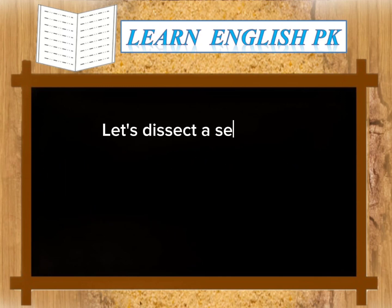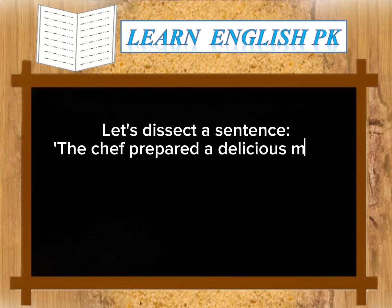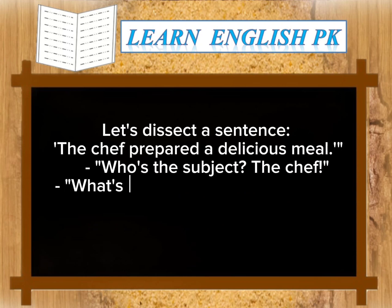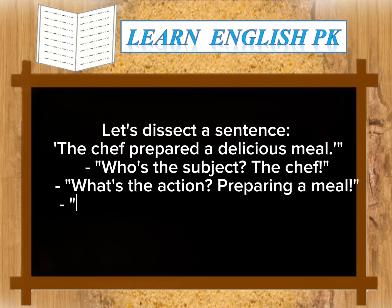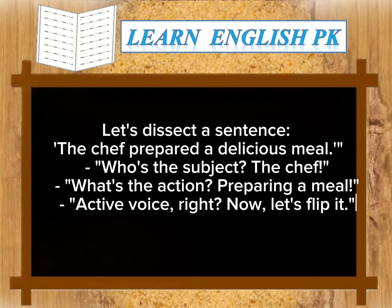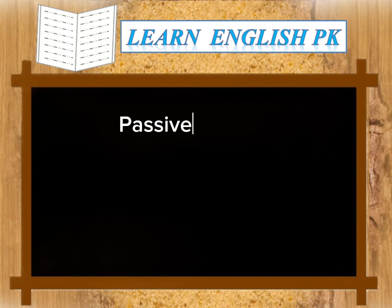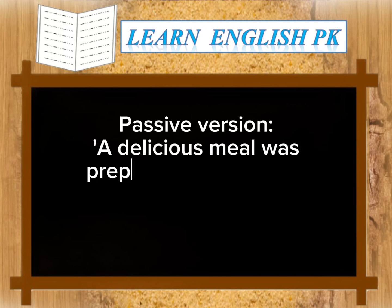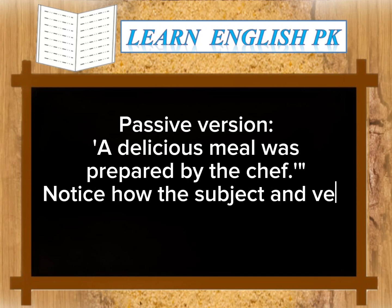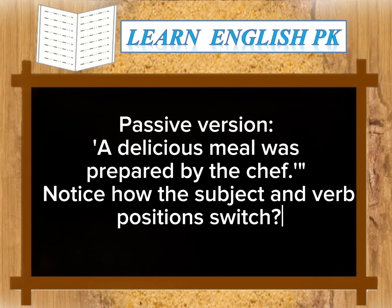Let's dissect a sentence: 'The chef prepared a delicious meal.' Who's the subject? The chef. What's the action? Preparing a meal. That's active voice. Now let's flip it to the passive version: 'A delicious meal was prepared by the chef.' Notice how the subject and verb positions switch.